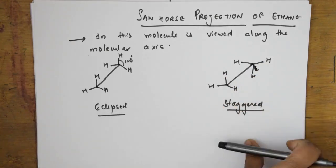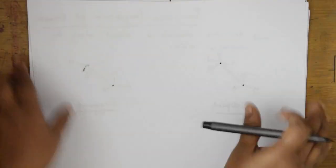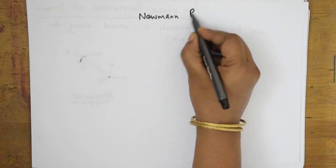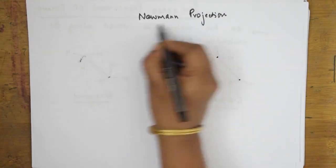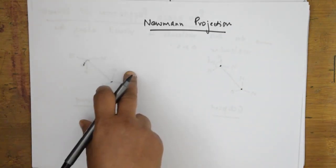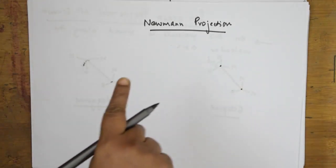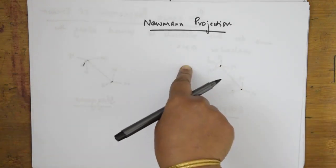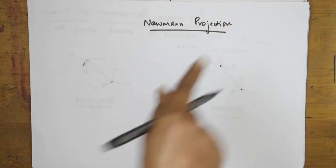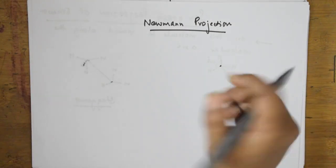This completes the sawhorse projection explanation. Now let us look at the Newman projection of ethane. In Newman projection, you observe the molecule straight down the bond axis — as if looking straight through connecting the two carbon atoms.